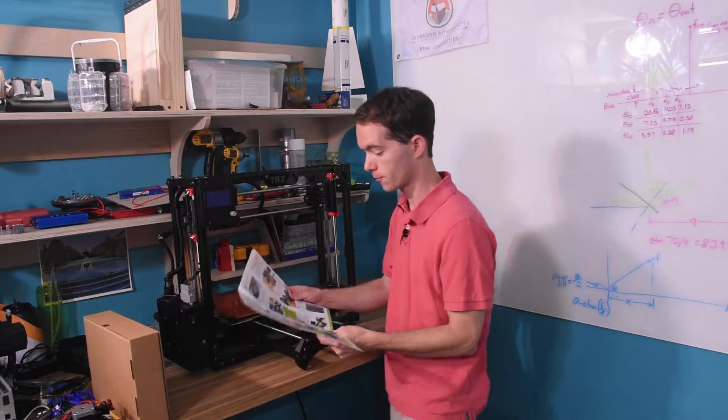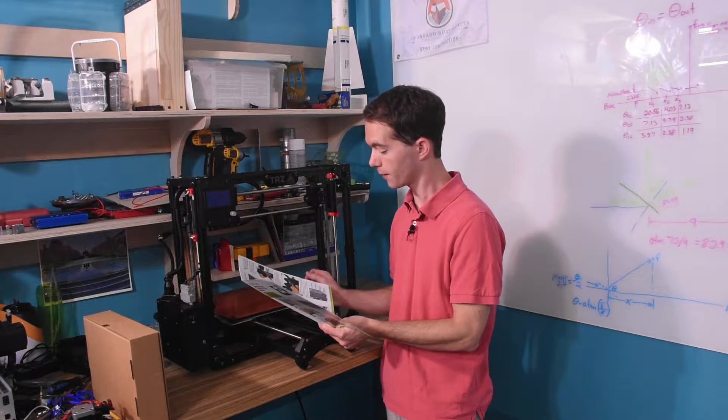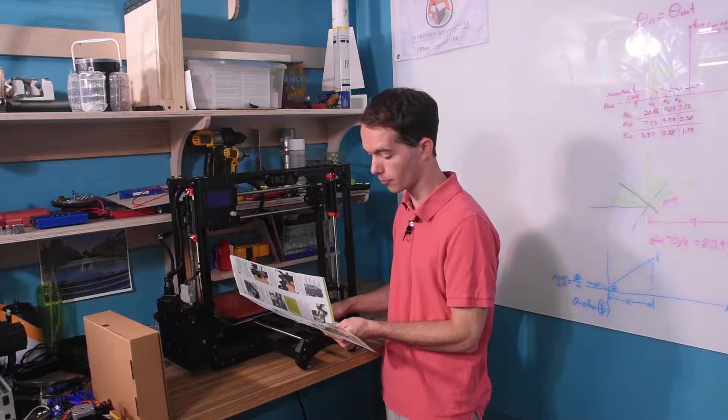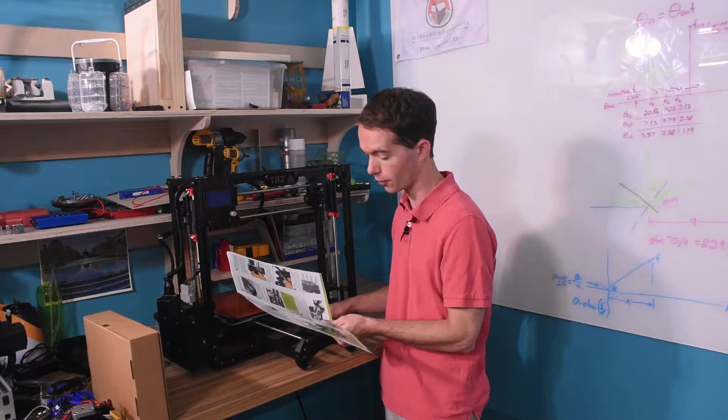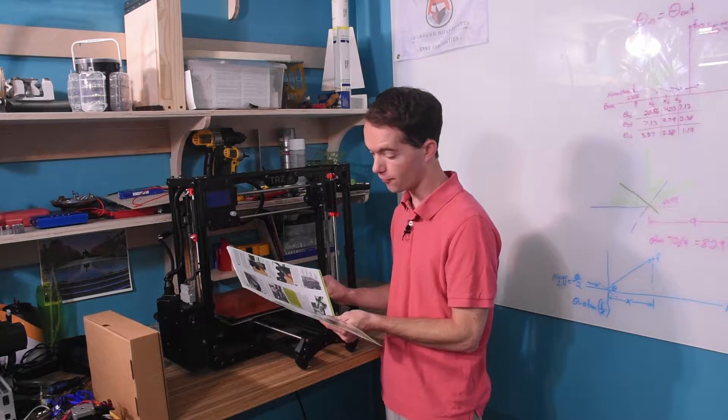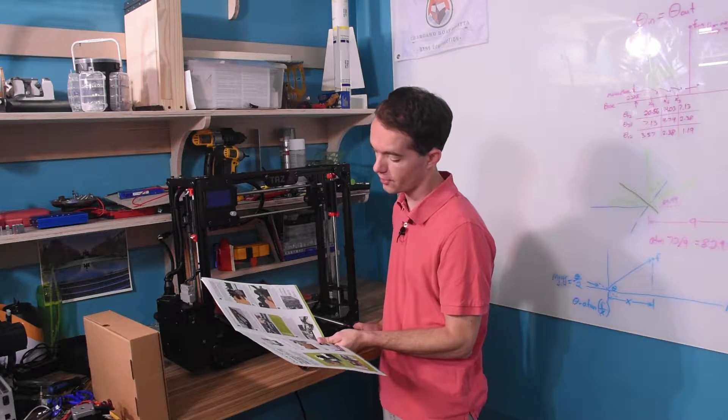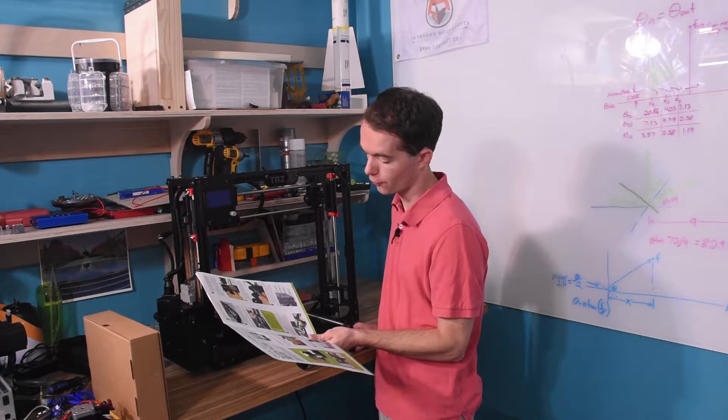However note, before completely tightening the Y axis bolts, push down on the Y axis aluminum bars against the printer frame lower bars by slightly tilting the printer onto its side edge, enough to lift the feet of the Y axis off the table. The weight of the Y axis will seat itself against the printer's frame.